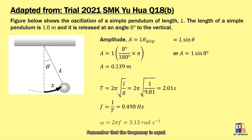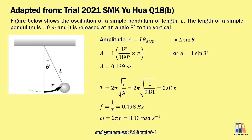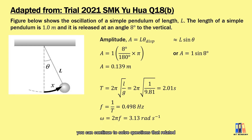The frequency is the reciprocal of the period, giving f = 0.498 Hz. The angular frequency is ω = 2πf = 3.13 rad/s. With these values, we have explored almost all the variables in simple harmonic motion, and you can continue to solve questions related to displacement, velocity, acceleration, or energy in the system.